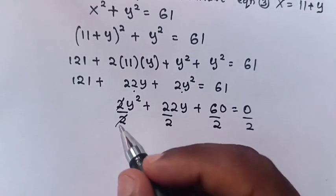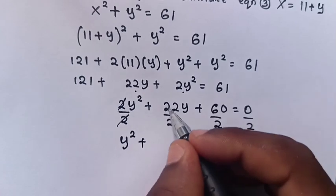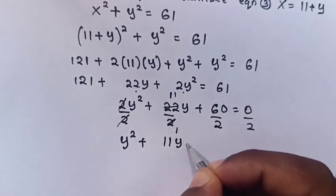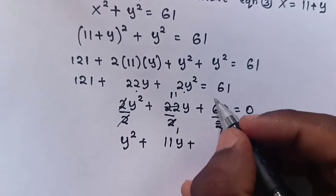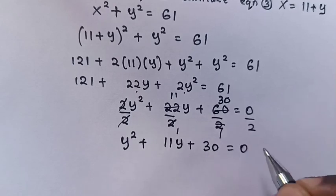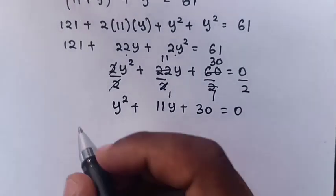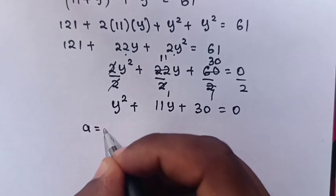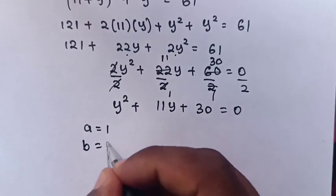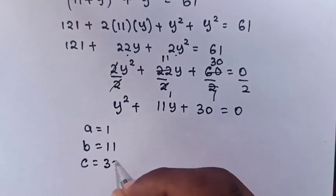After dividing by 2, we get y squared plus 11y plus 30 is equal to 0. From this quadratic equation, the value of a is 1, b is 11, and the value of c is 30.